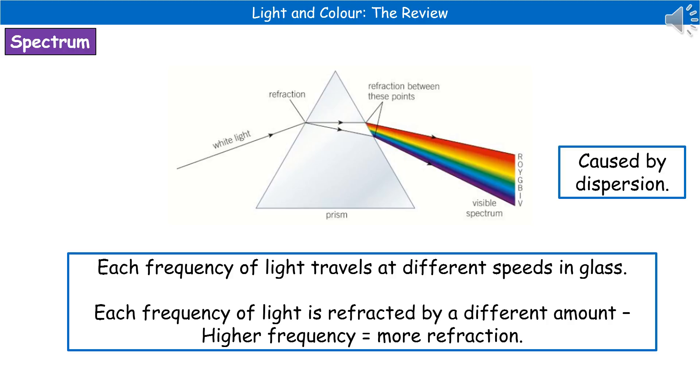Hopefully you've done that experiment at school where you've had the little ray boxes, you've had a prism, and then you've shone the light through. And what you end up with is that visible spectrum then produced on the piece of paper on the desk.